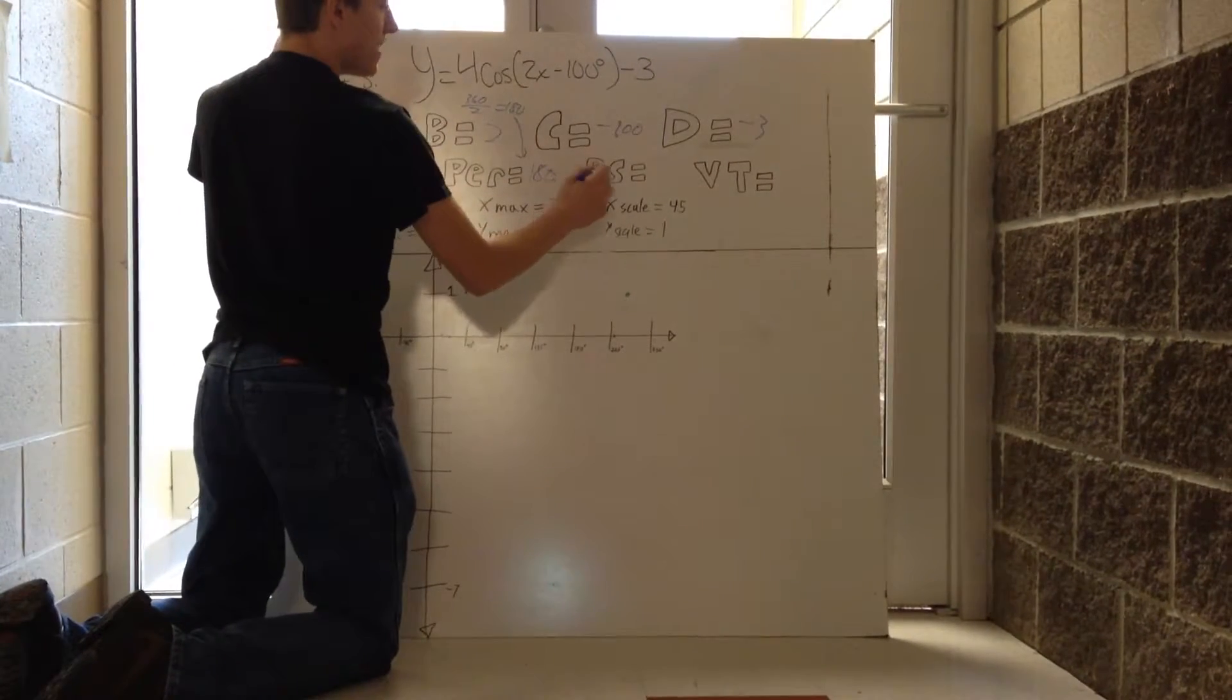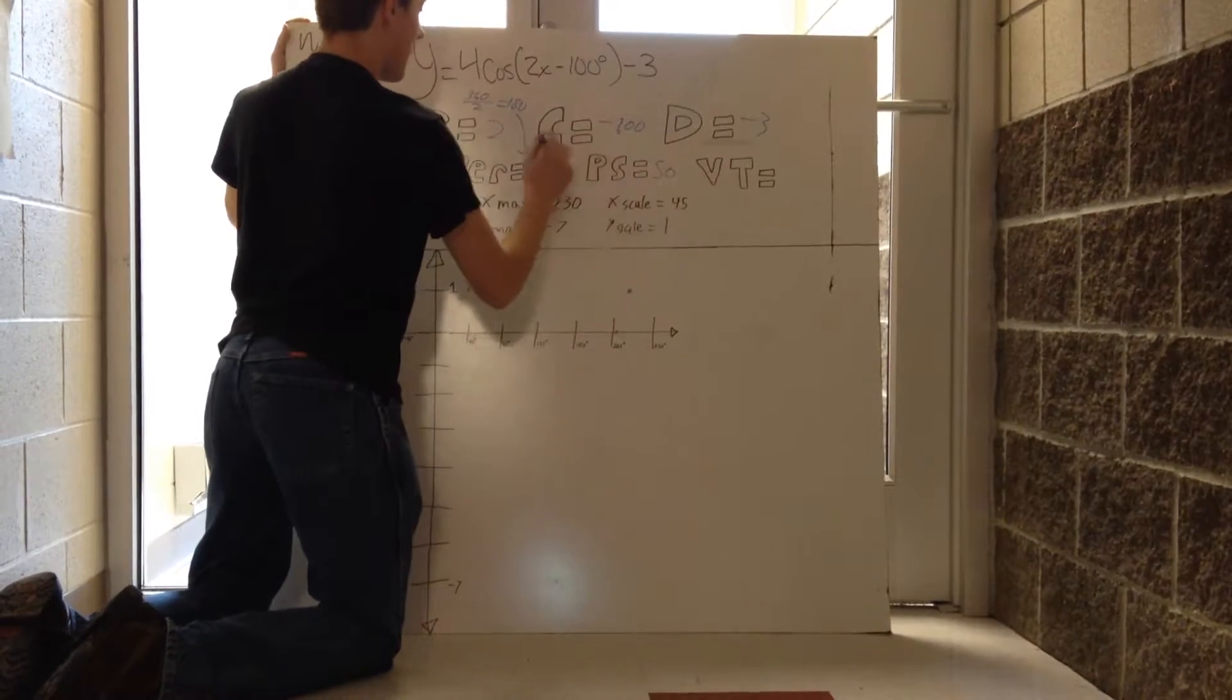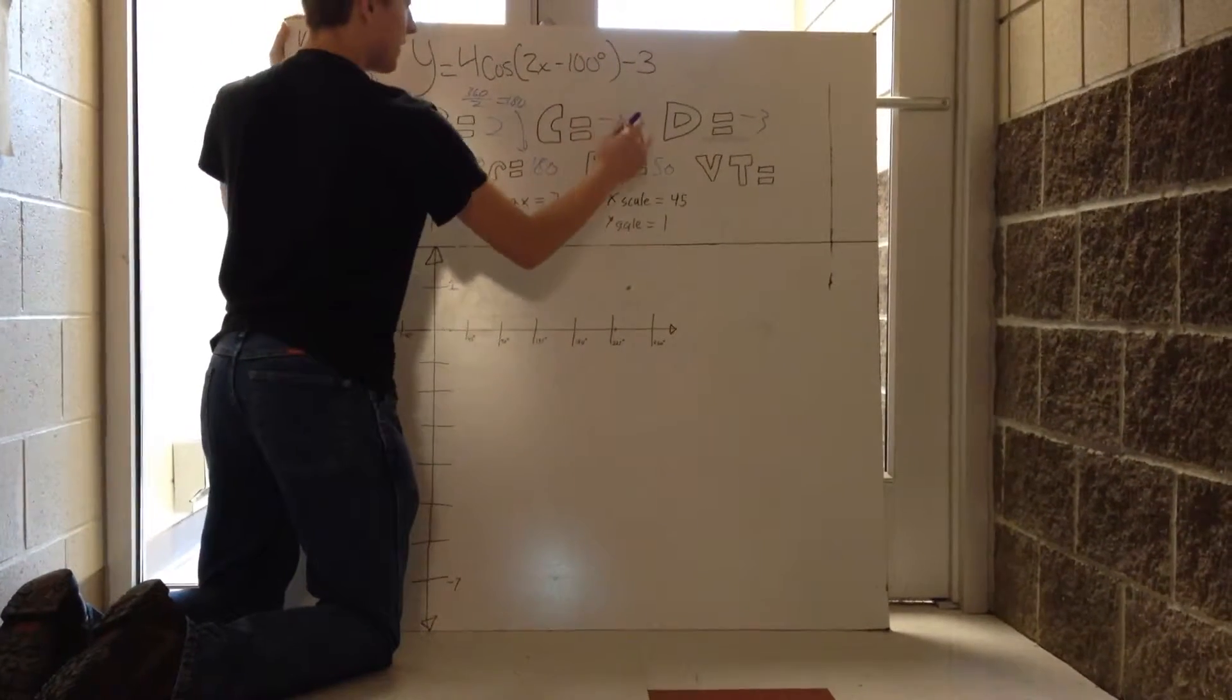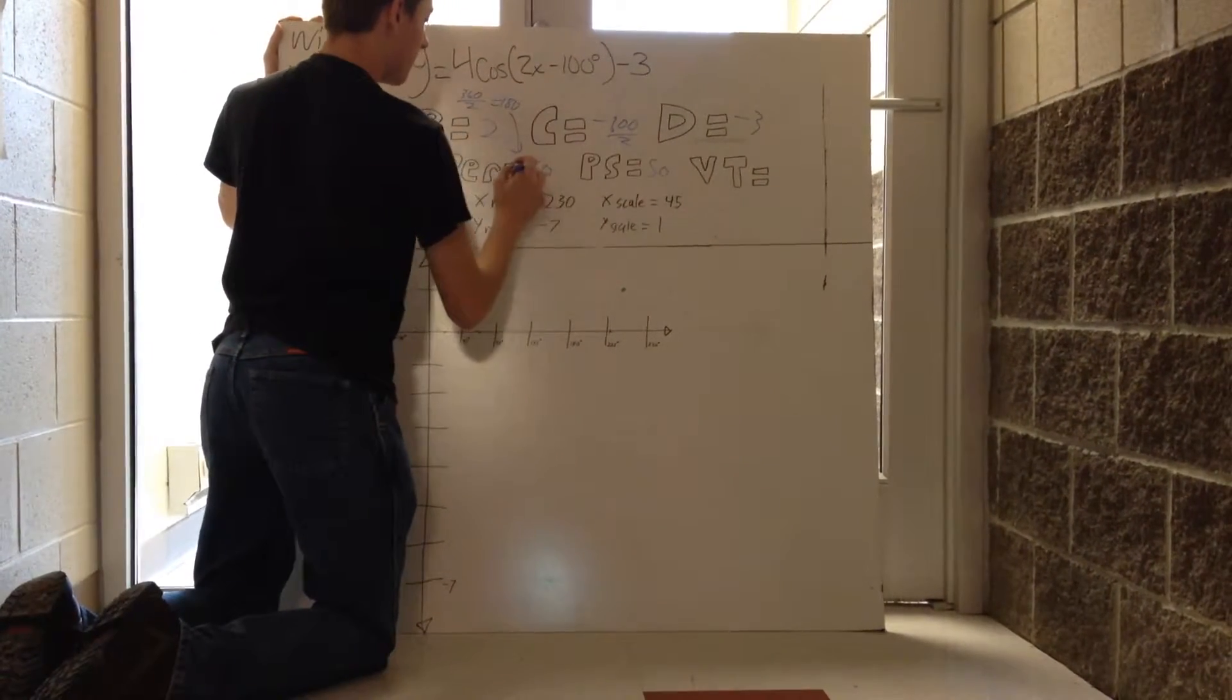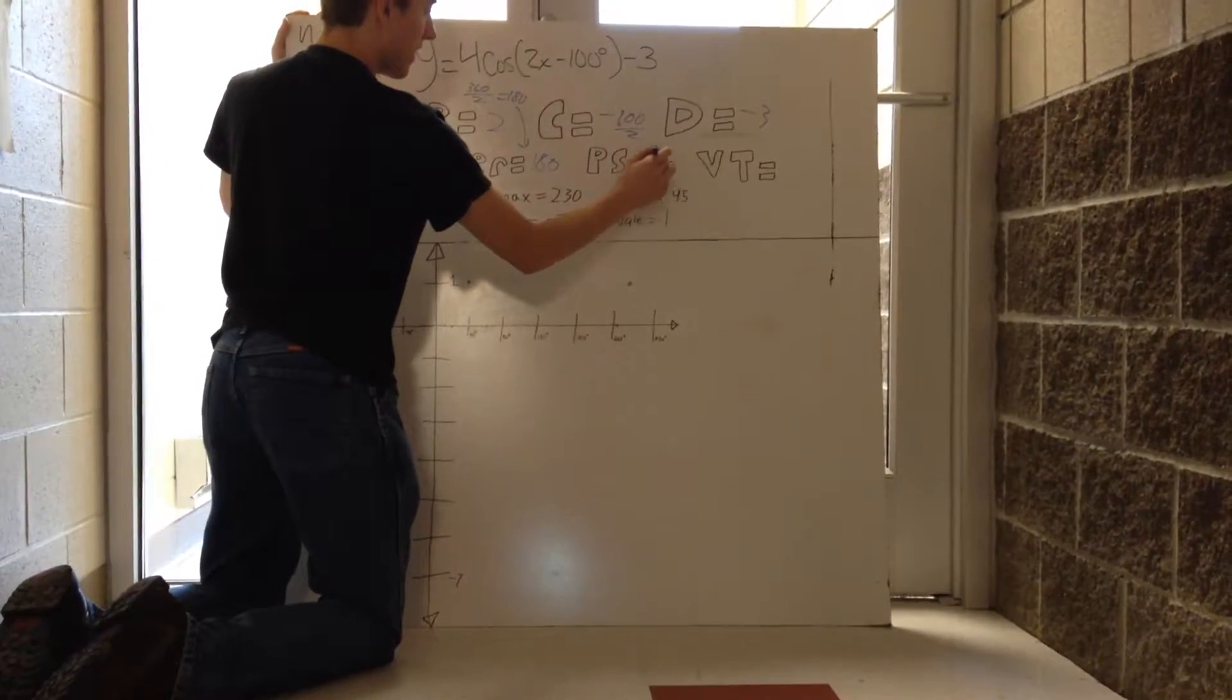So for phase shift, it'll be 50. And that is gotten from your negative 100 divided by 2. That 2 coming from, once again, B, so it comes down to 50.